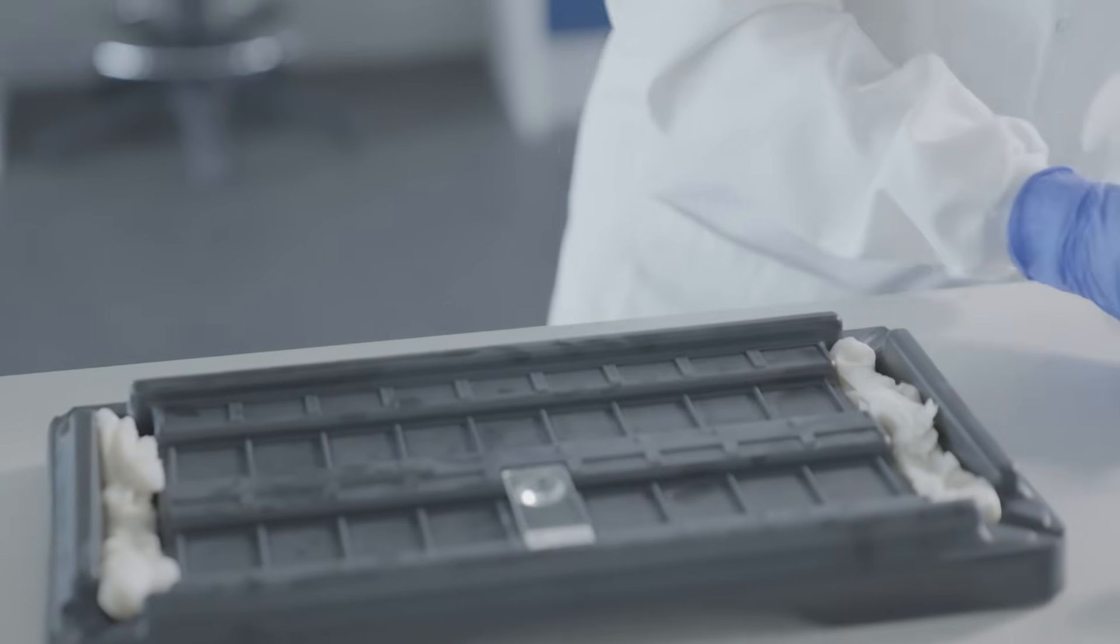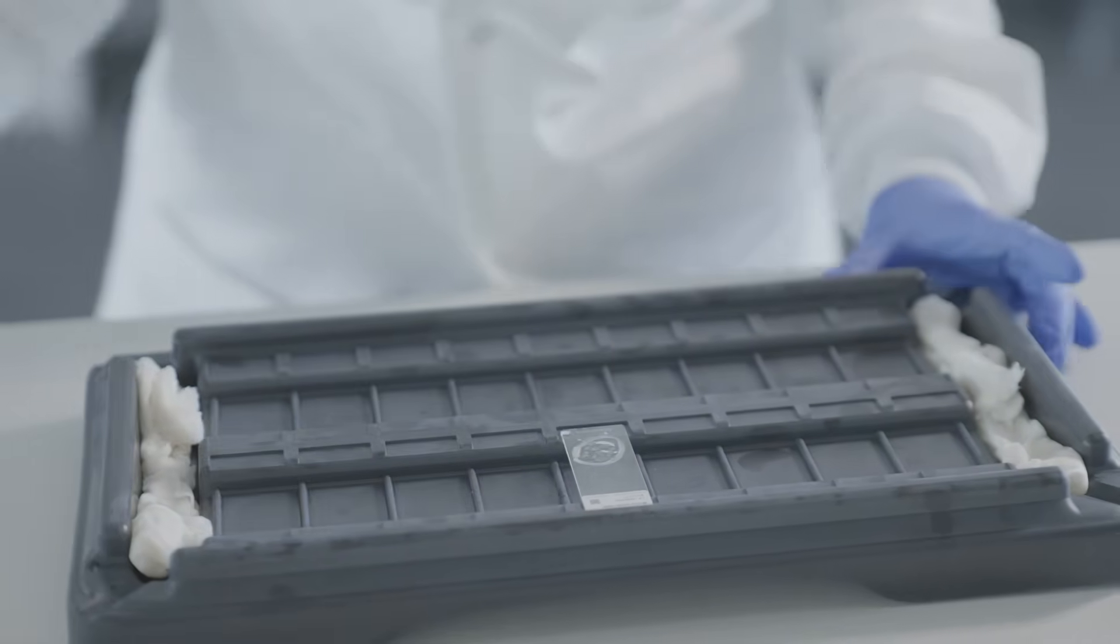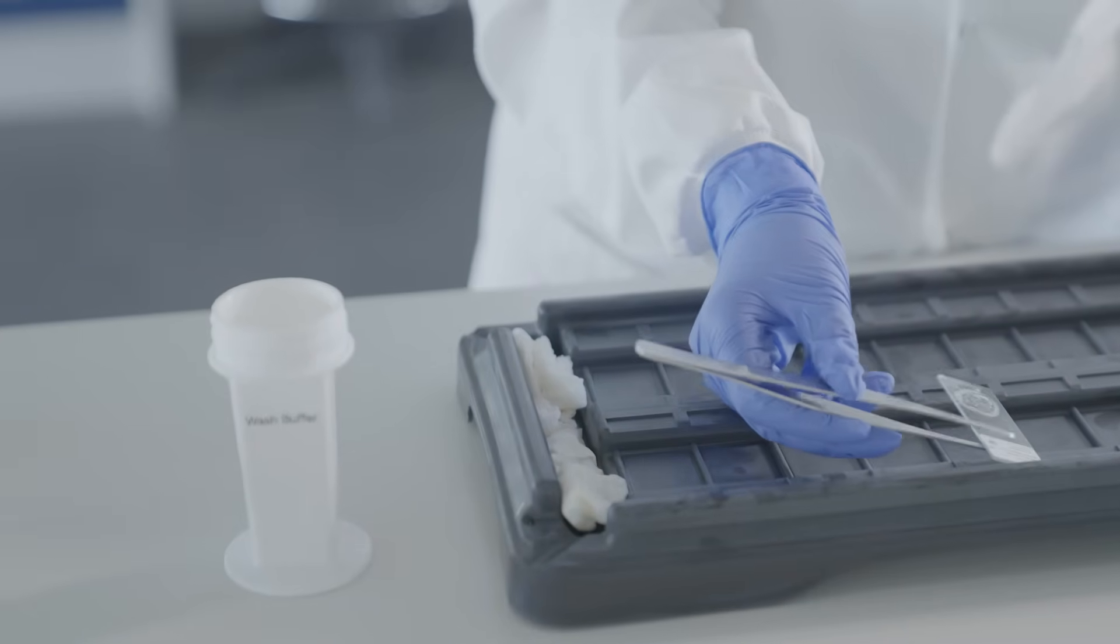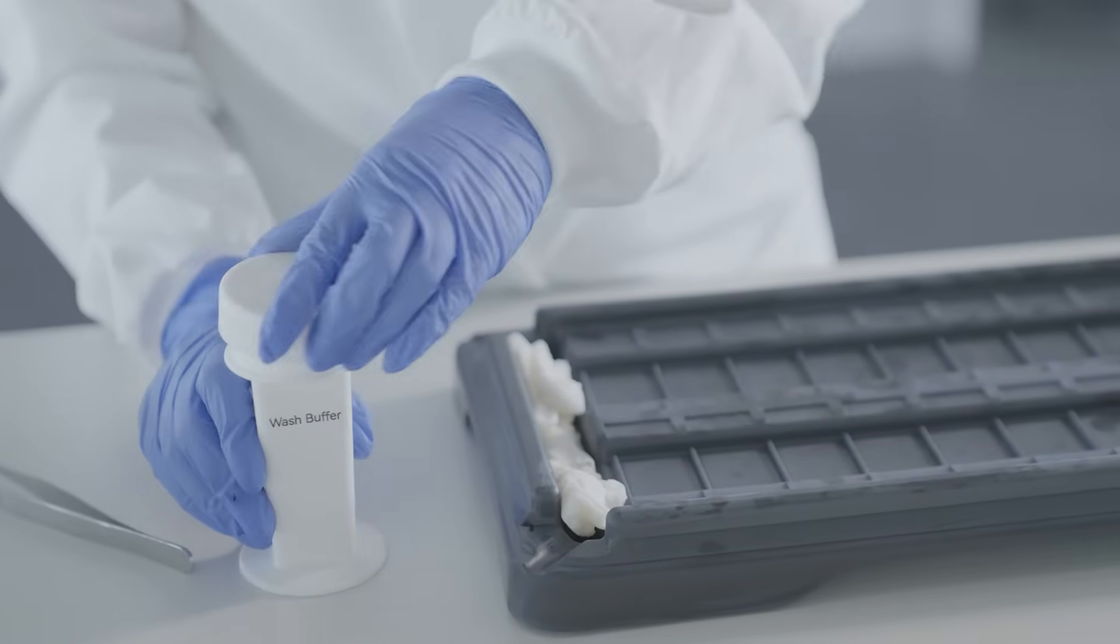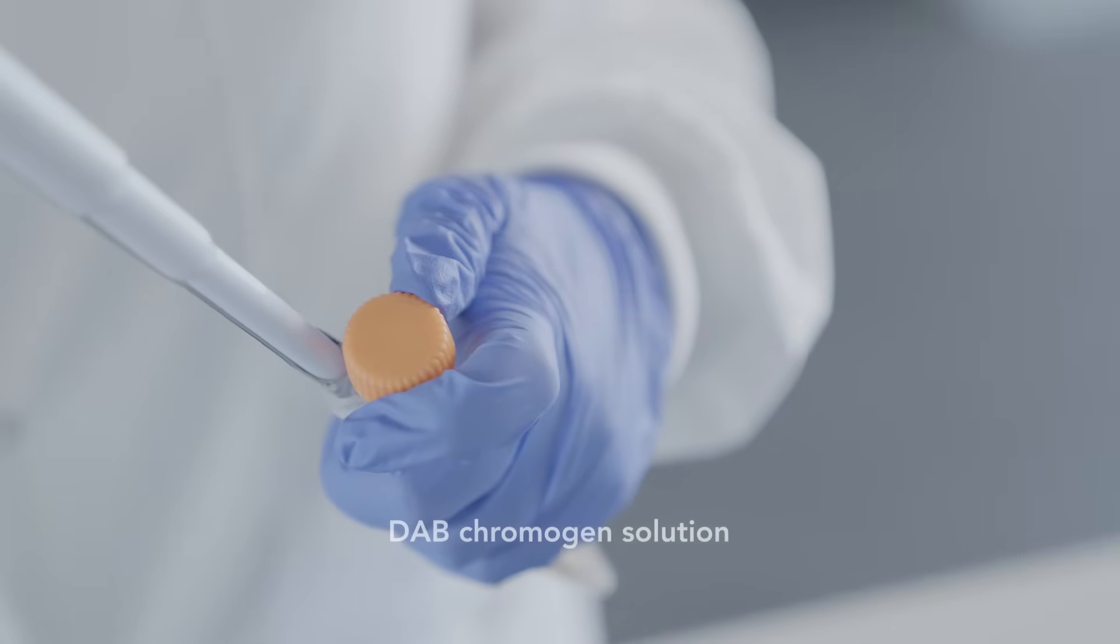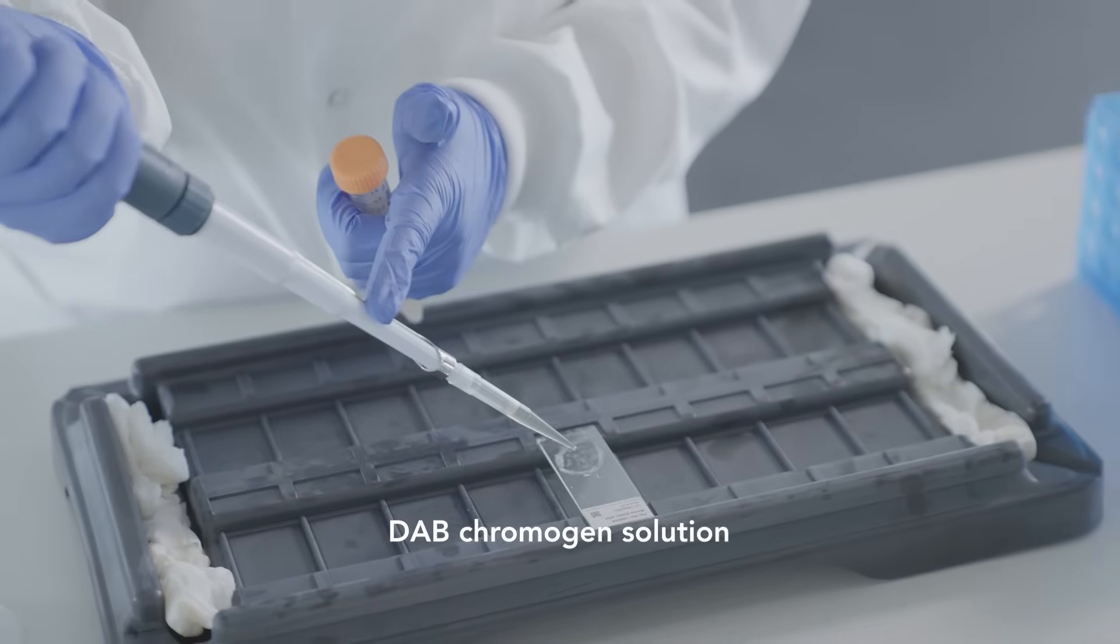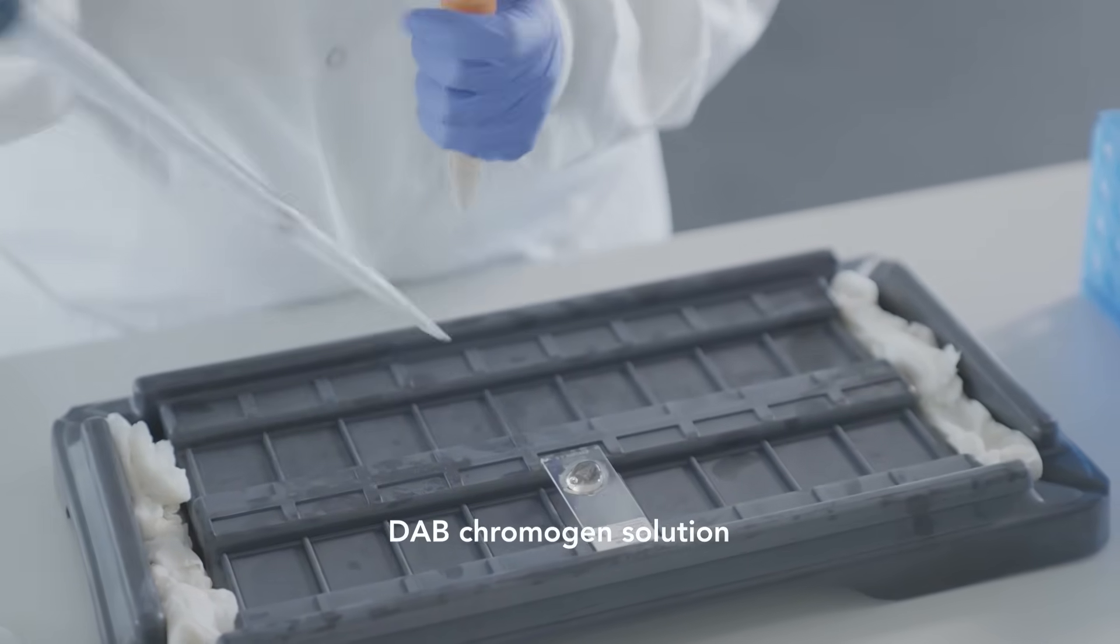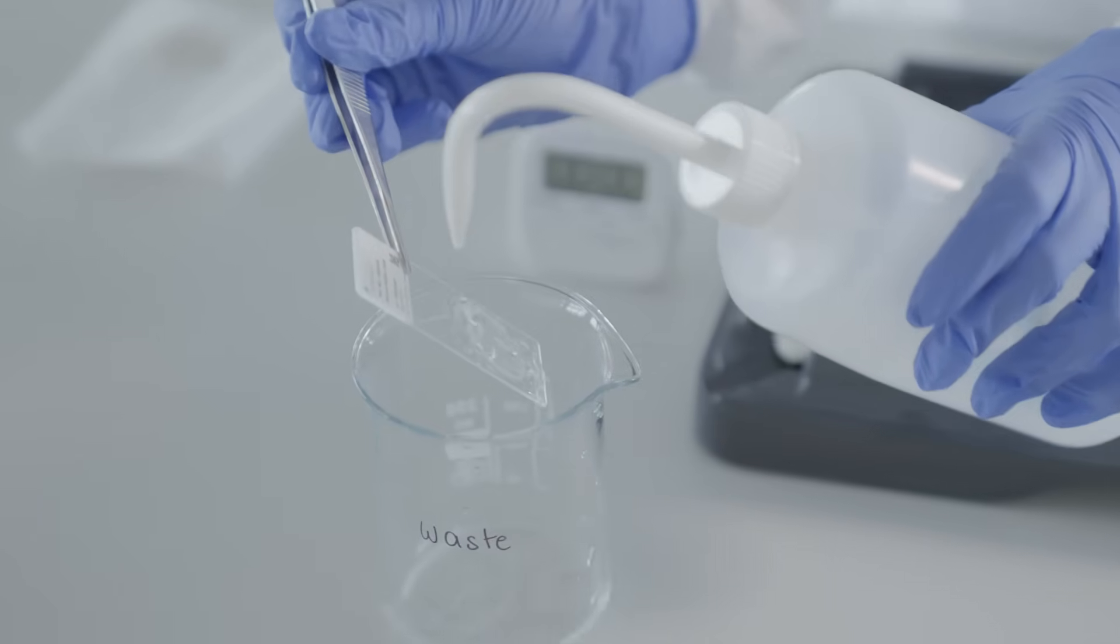Wash slides three times with wash buffer for three minutes each. Prepare an appropriate volume of the DAB chromogen solution based on the manufacturer's guidelines. Apply the substrate carefully and incubate for five to ten minutes until a brown color develops. Rinse sections gently with distilled water.